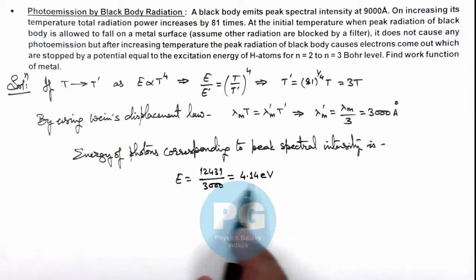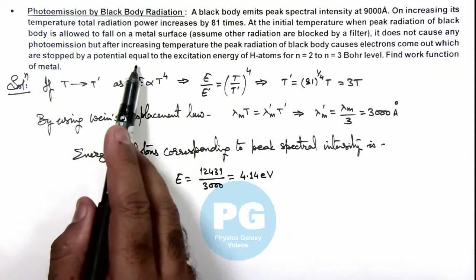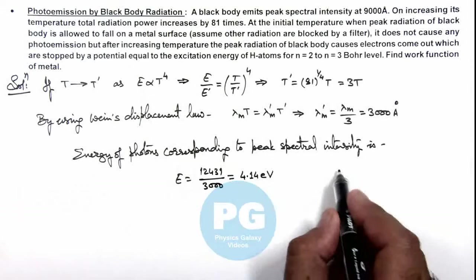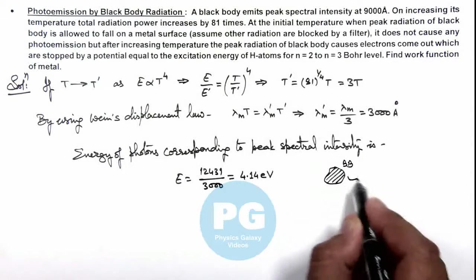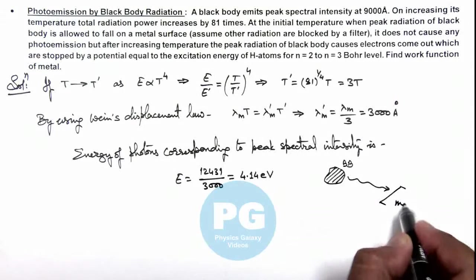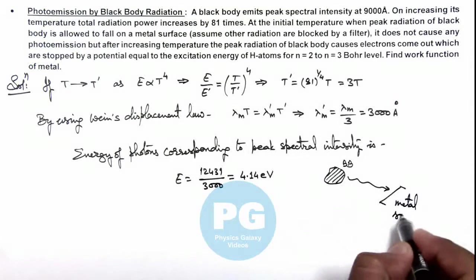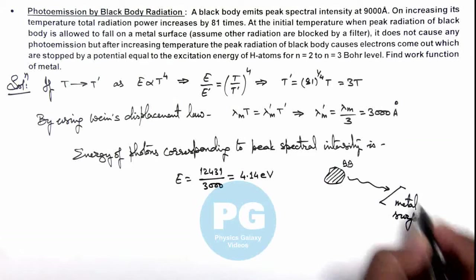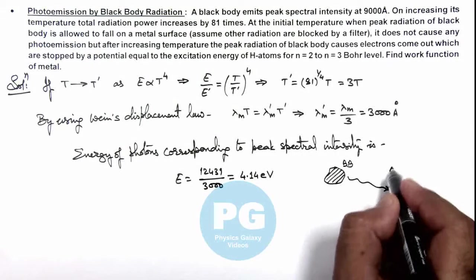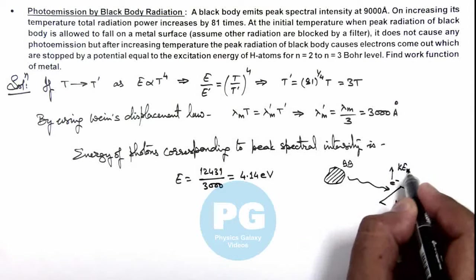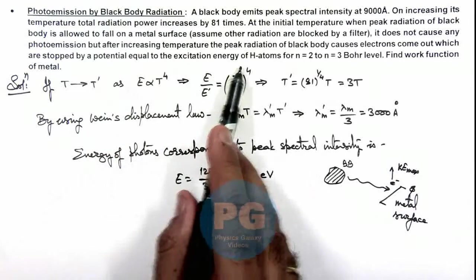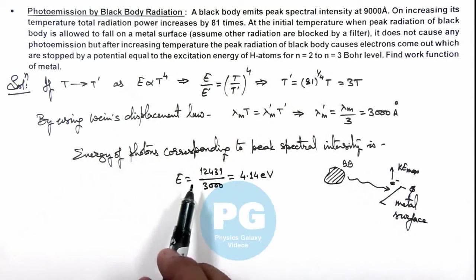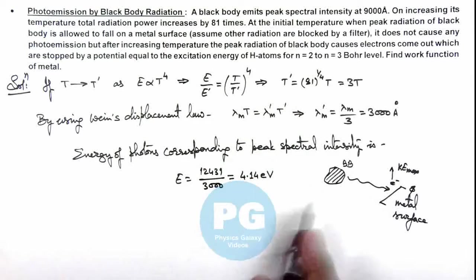If we talk about the stopping potential of the metal surface on which the radiation is falling, here we can draw a picture like if this is the black body from which radiation is incident on a metal surface having a work function phi, and electrons of maximum kinetic energy are emitted which are stopped by a potential equal to the excitation energy for hydrogen atoms from 2 to 3 level. So here we can write KE max.